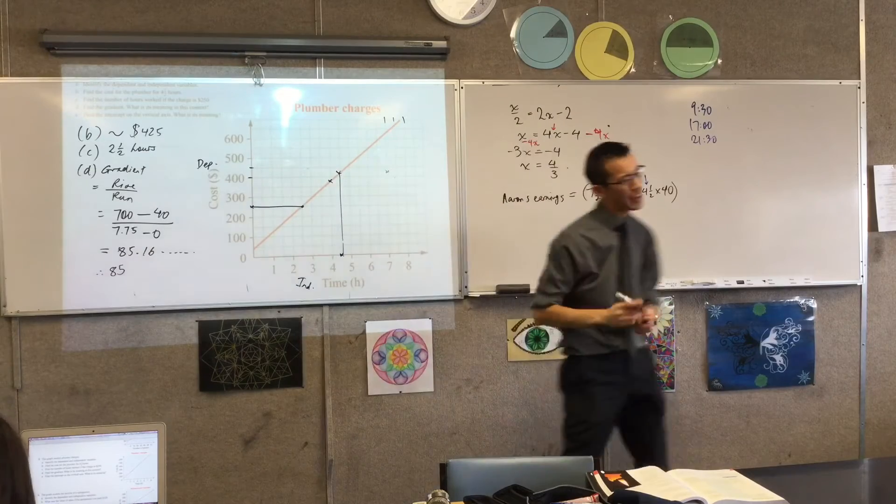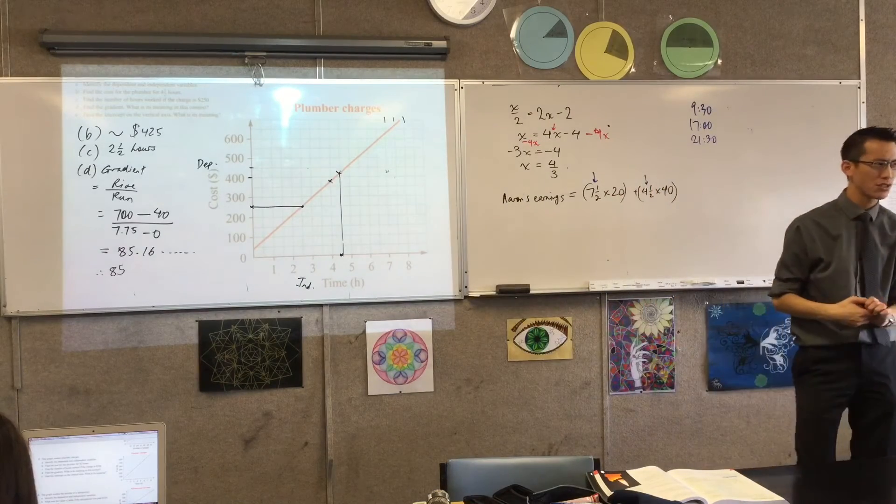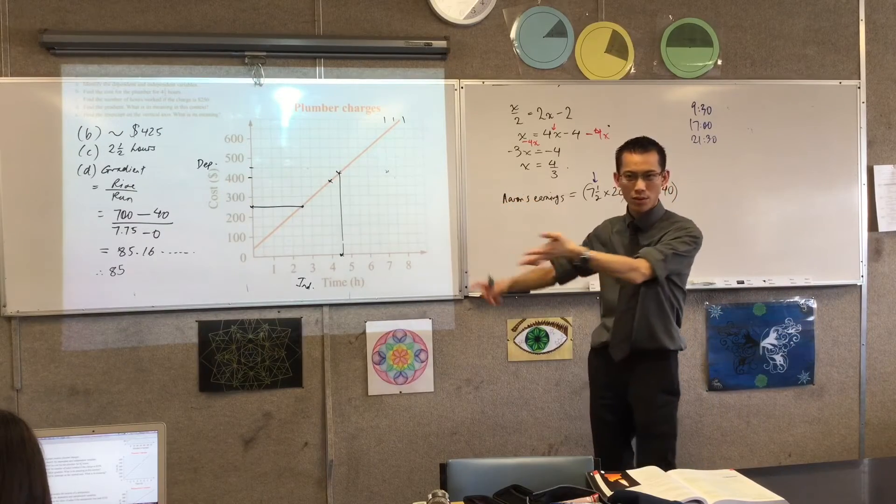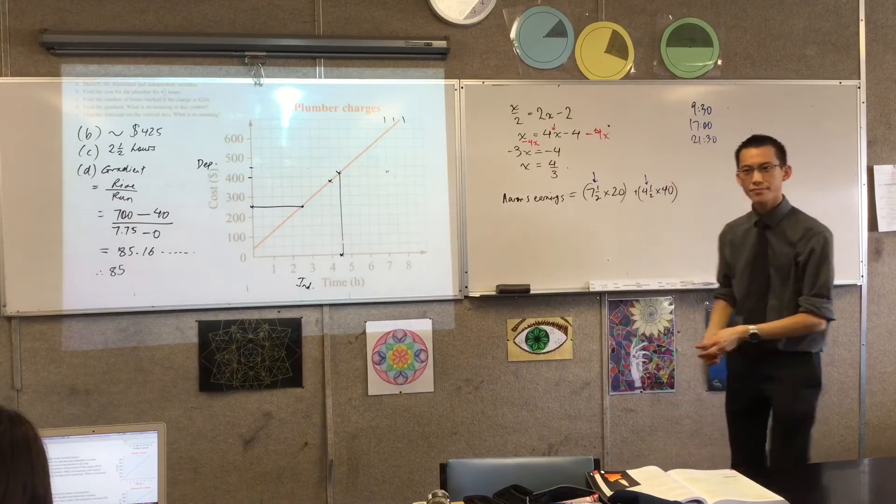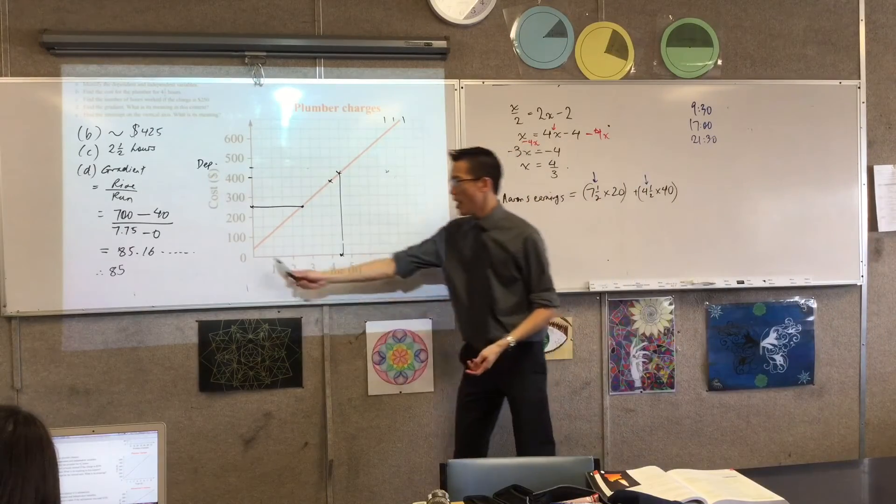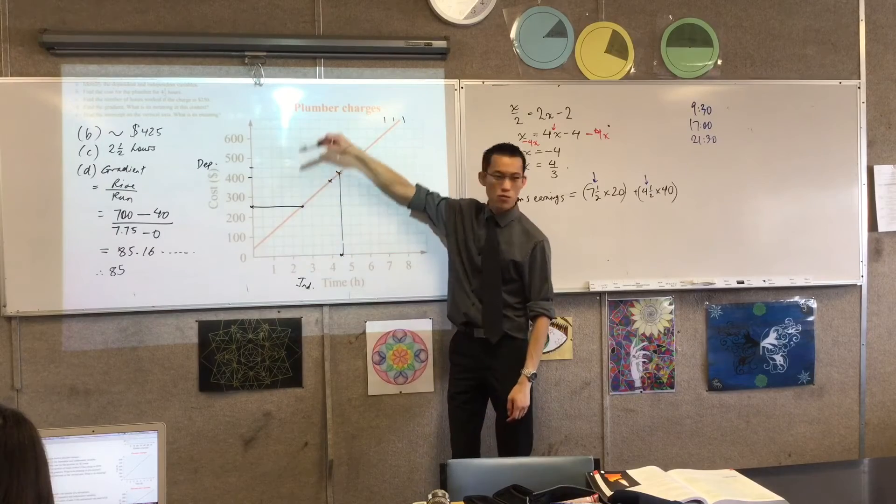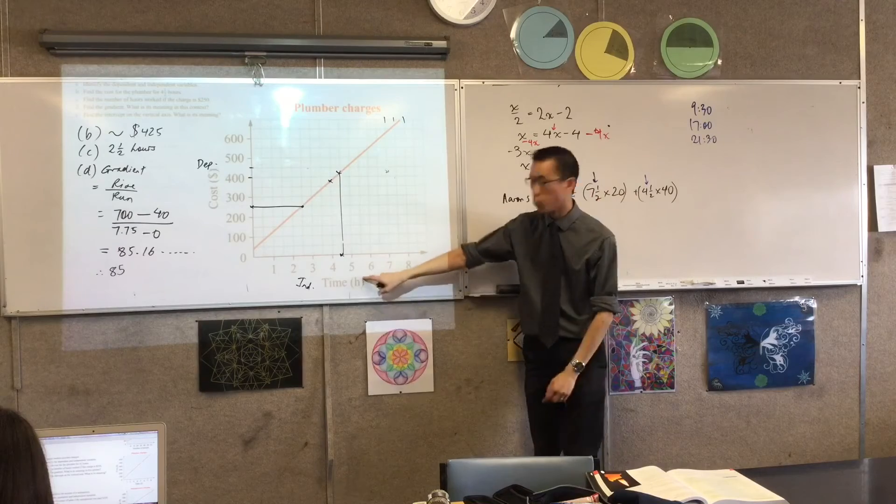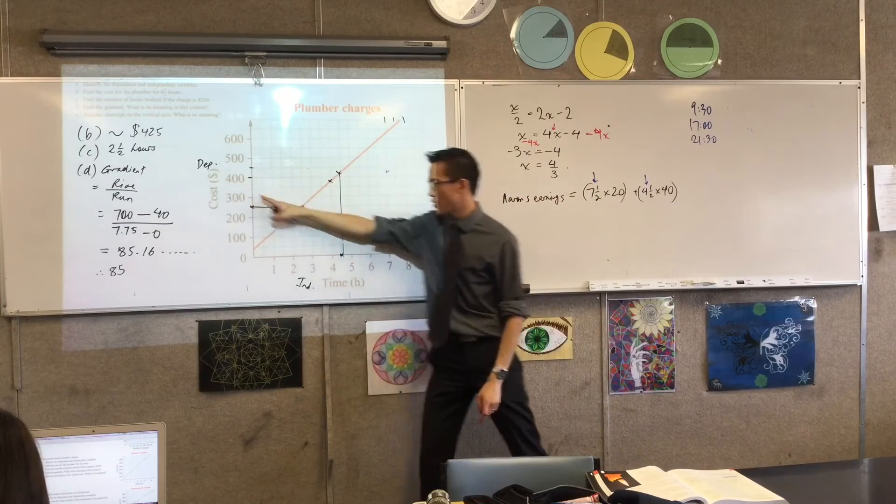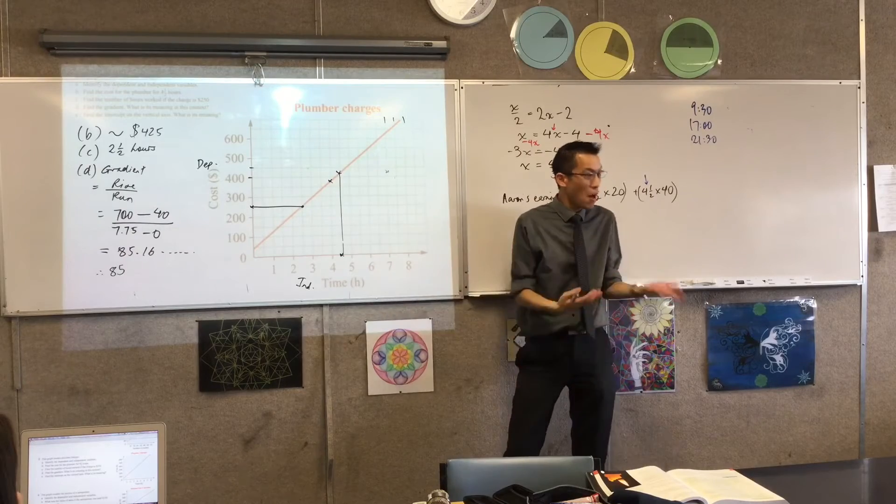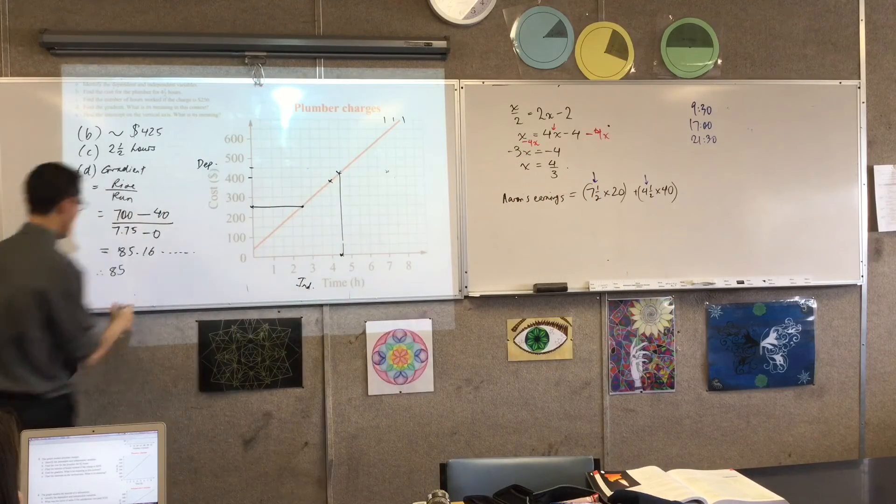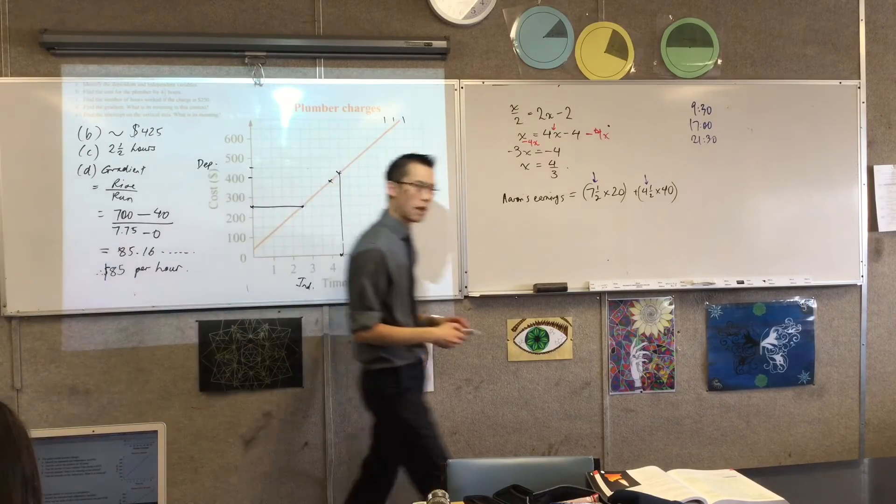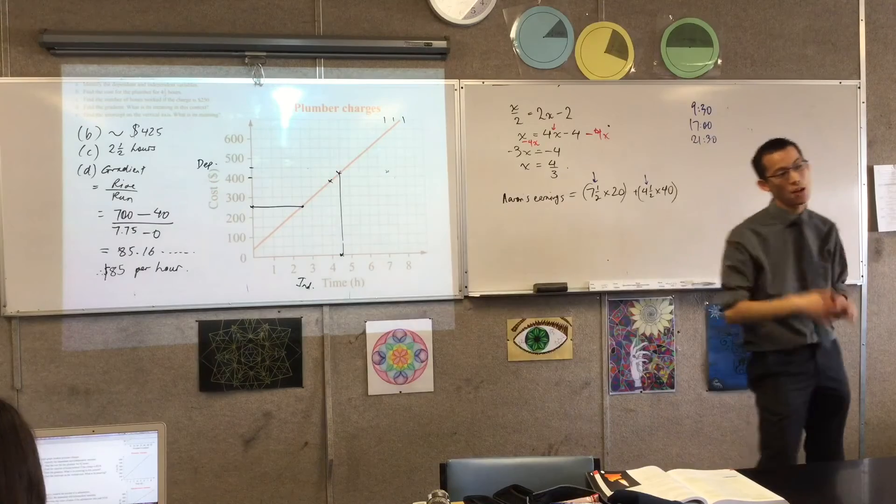Now, I've done the first half of the question, but look again at what it's asking us. What do we actually want? It says, find the gradient. What is its meaning in this context? What would you say? Yeah, Renee? The cost per hour. Yeah. So what's happening is, rise over run means how much are you rising, how much is cost going up every time you run one unit. That's one hour, right? So that's how many dollars each hour costs, about $85. So I'm going to say, that's $85 per hour. Okay? That's how much this plumber is actually charging us and how we interpret the gradient.